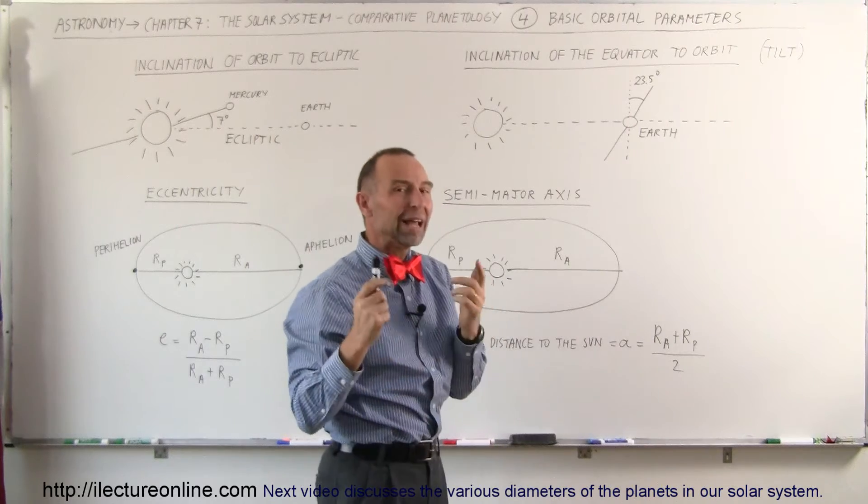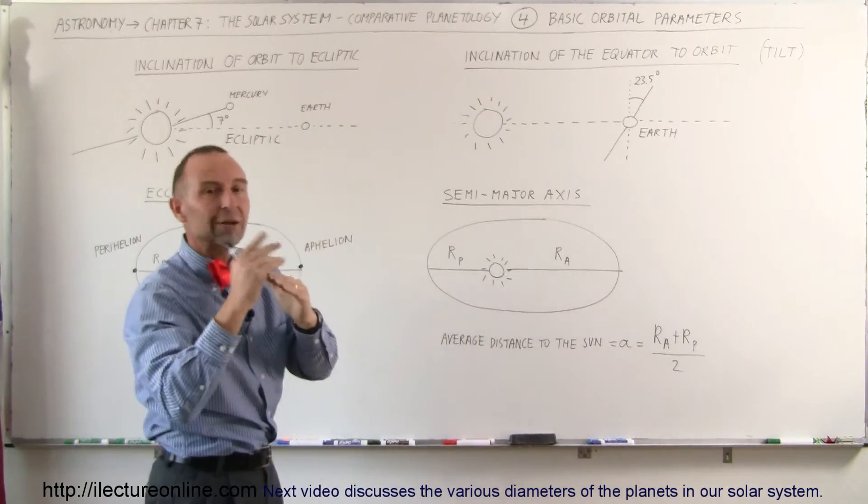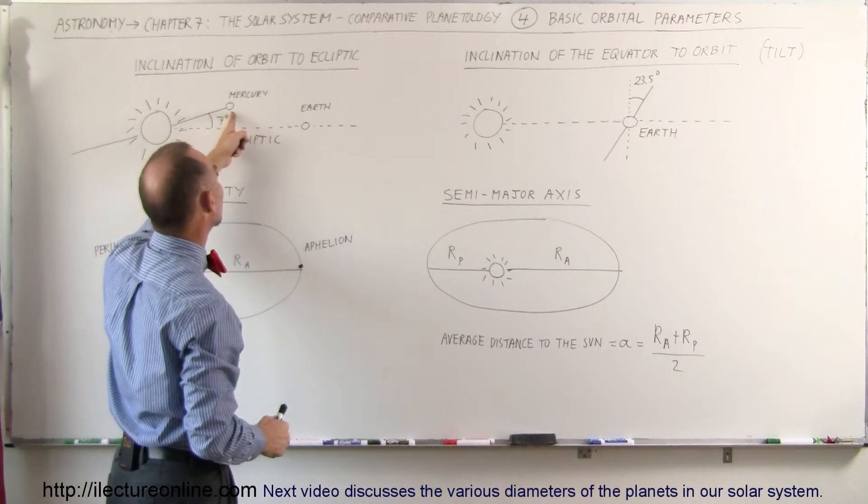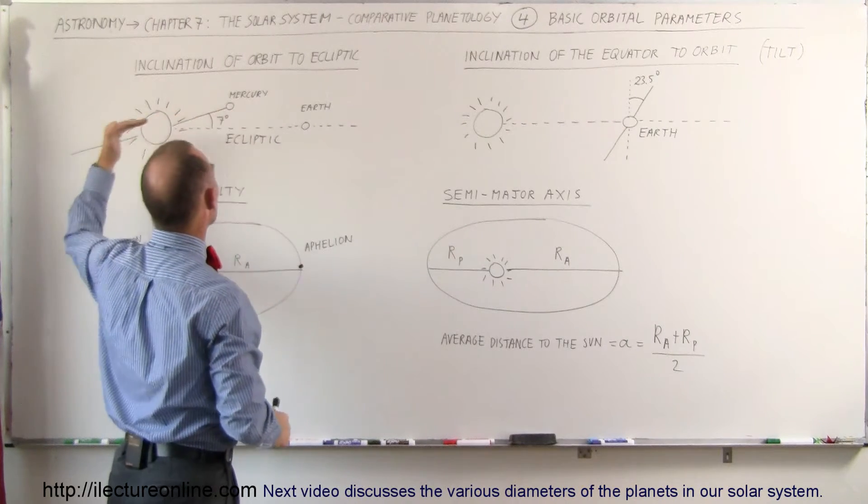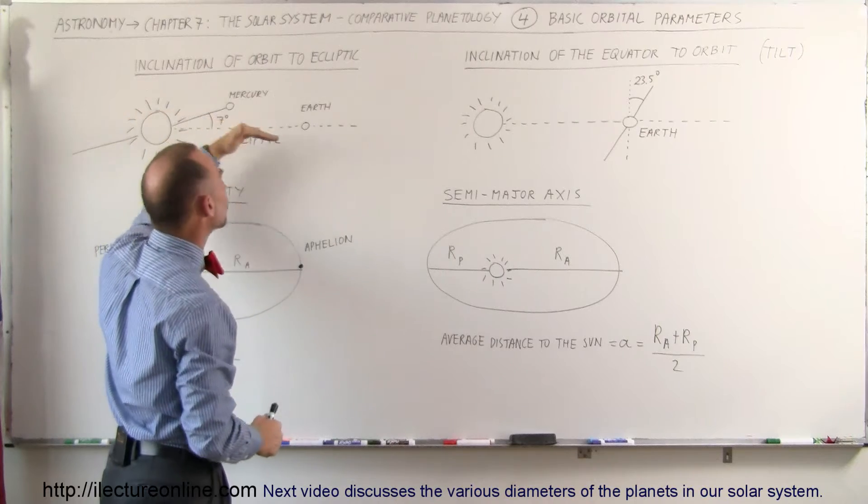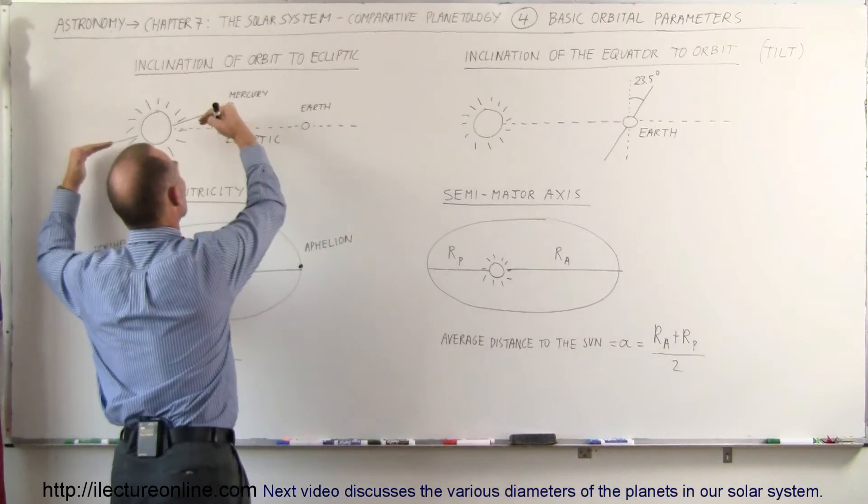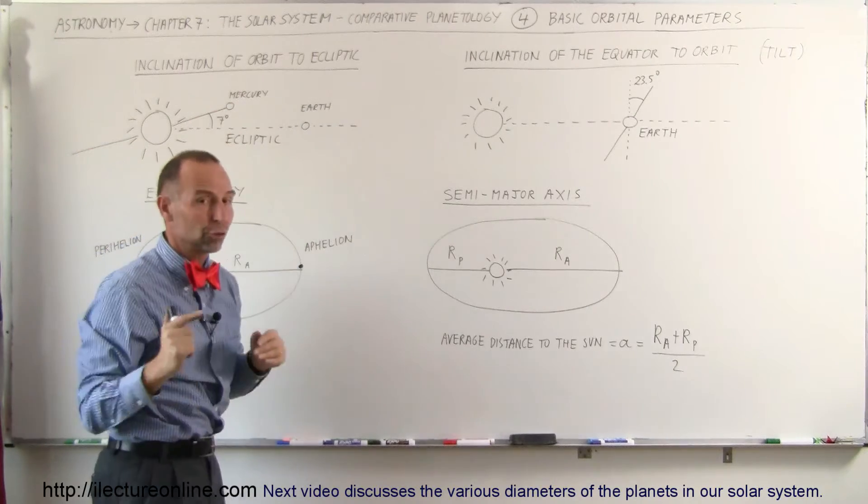Now, of course, for every planet, their orbital tilt or their rotational tilt is compared to the actual orbit. So Mercury's tilt is relative to the orbit of Mercury, not to the orbit of the Earth. So the tilt of the planet is relative to the planet's orbital plane, not to the Earth's orbital plane.